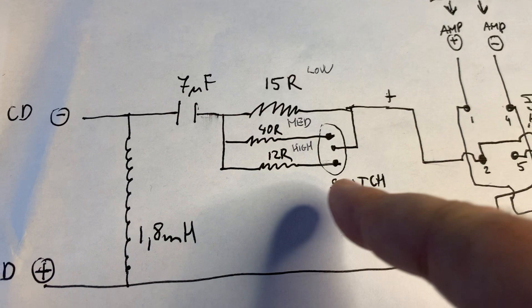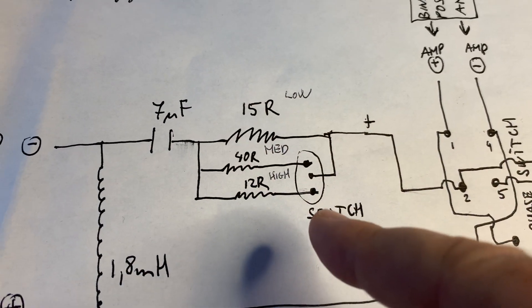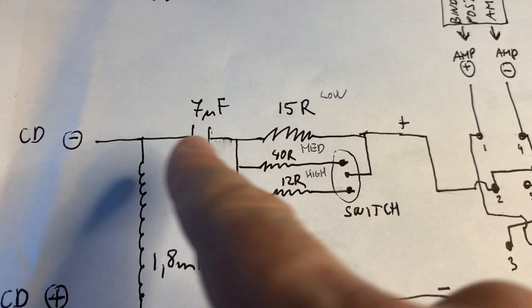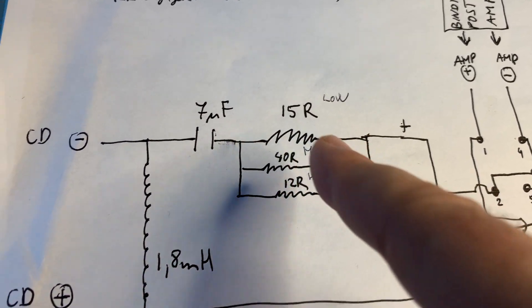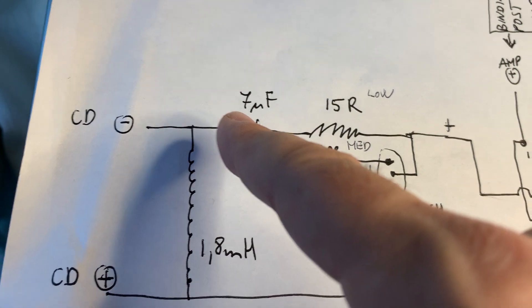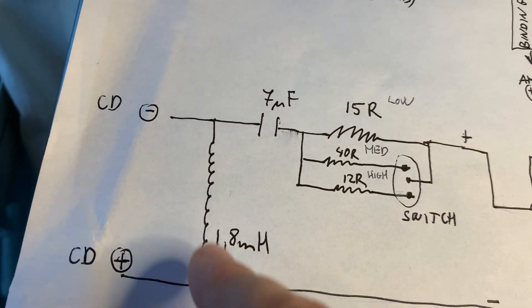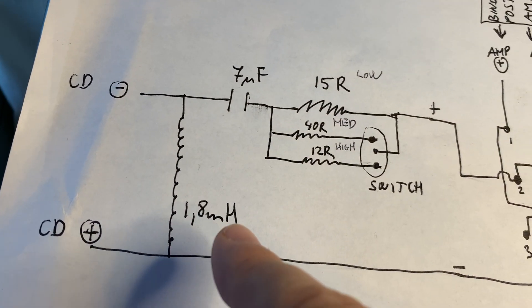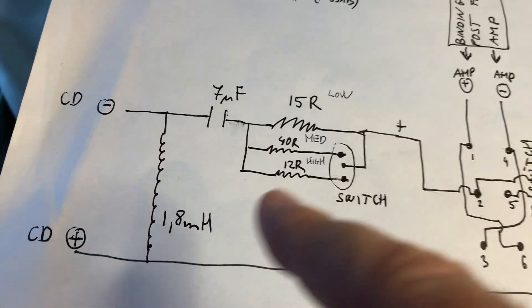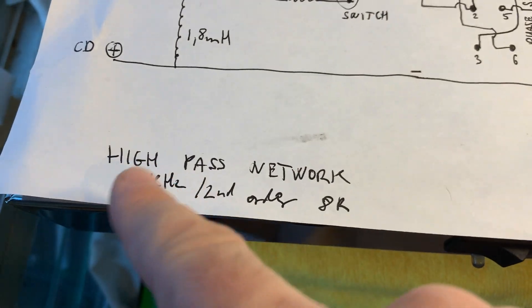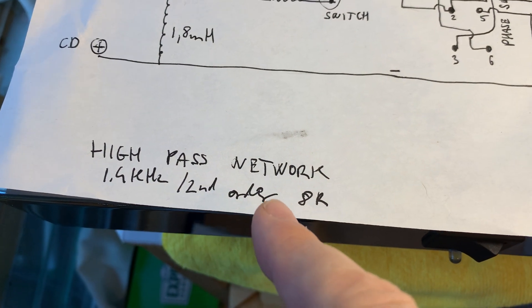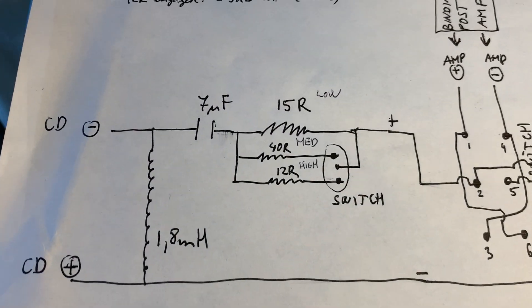After this resistor network comes a 7uF capacitor in series with this resistor network. Then, between the plus and minus terminals, there's a 1.8 mH choke. So this is the high-pass filter. That's 1.4 kHz second-order network.